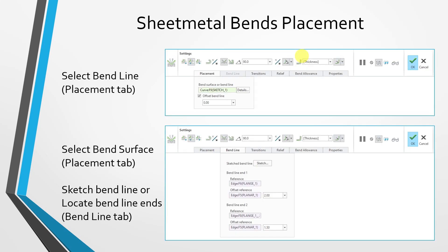The next important aspect is how you're going to place the sheet metal. If you go to the placement tab, there's a collector that allows you to specify either the bend surface or a bend line. The bend line would be a pre-existing sketch or curve, and you can choose it from the placement tab. If you choose an actual bend line, the bend line tab will be grayed out. You also have a checkbox to offset some distance from that selected bend line.